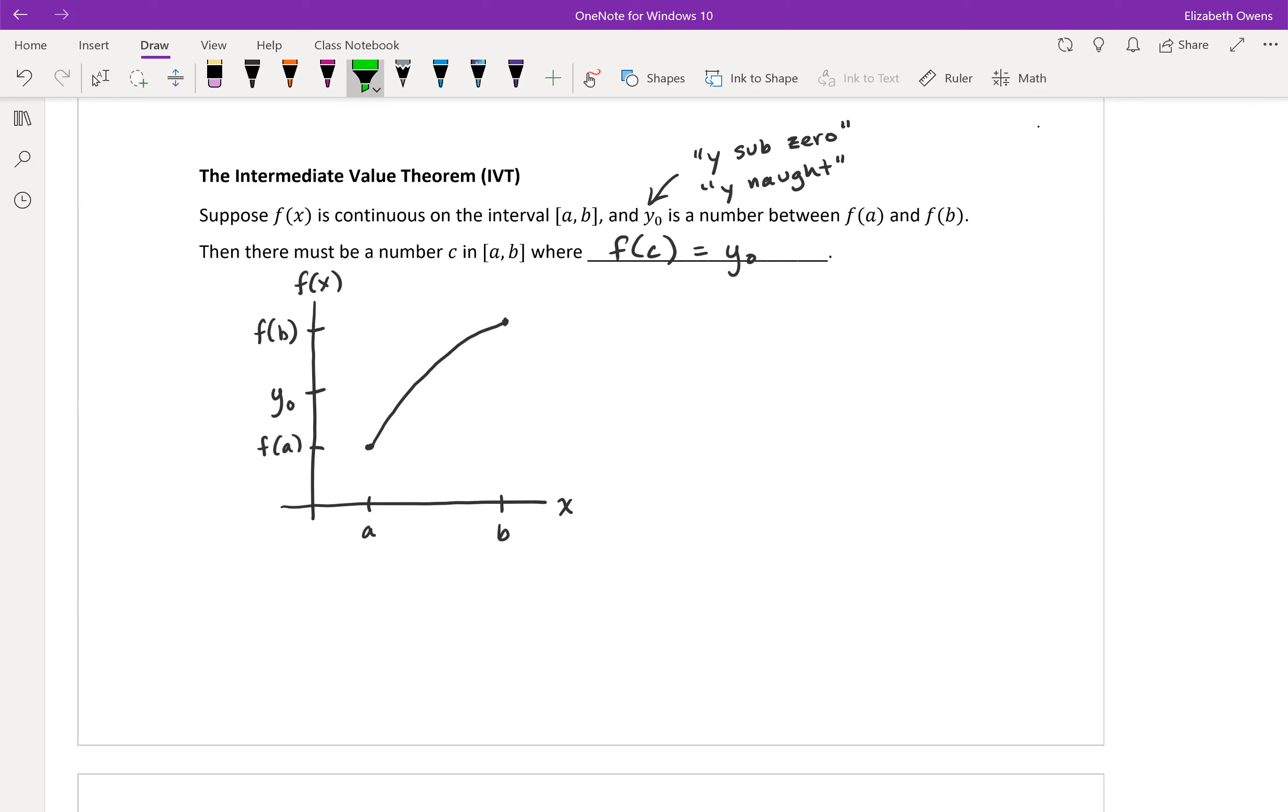So all of our conditions are met with this picture. It's continuous on the interval from a to b, y not is a number between f(a) and f(b). So then there must be a number c in the interval a to b where f(c) equals y not. And we can see that on the picture here. So y not is f(c), that means c would be right here. So f(c) equals y not. Our Intermediate Value Theorem holds true and is satisfied here.